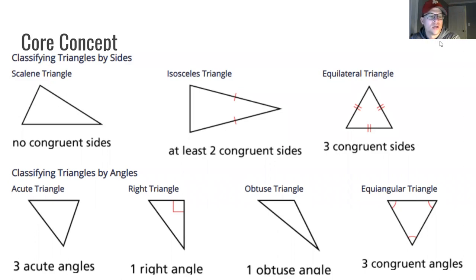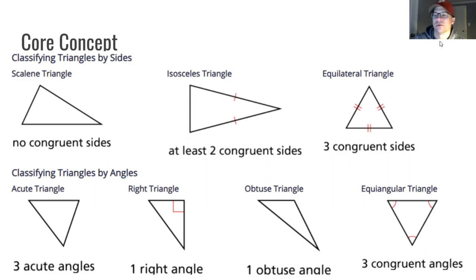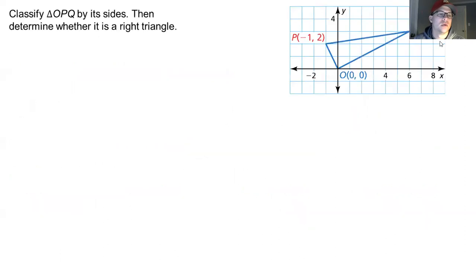For angles: acute is where all three angles are less than 90 degrees. A right triangle has one angle that is exactly 90 degrees. An obtuse triangle has one angle over 90 degrees. And an equiangular triangle has three congruent angles. Any triangle that is equilateral is also equiangular — if all three sides are equal, then all of the angles are also going to be equal.